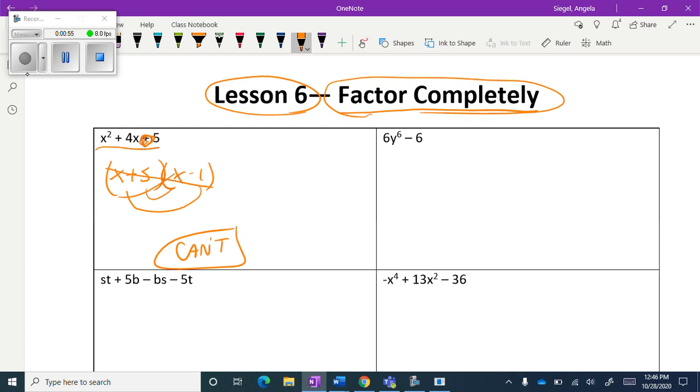For this second one, remember that first the sum is factor out a GCF, so we're going to do that first. Then we are going to factor. Notice that this is that difference of squares, and so we are going to factor that even more.